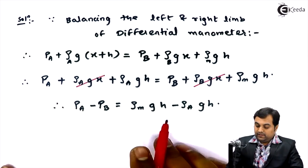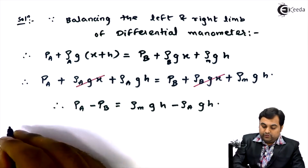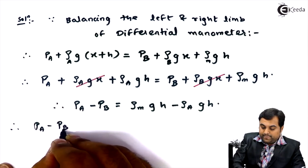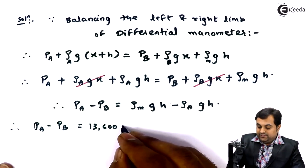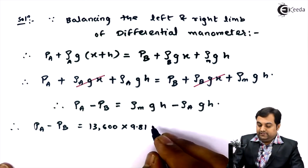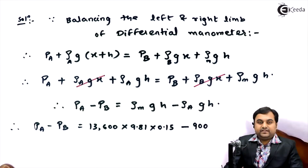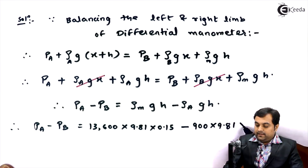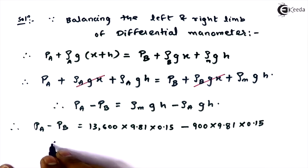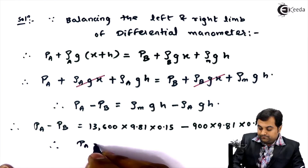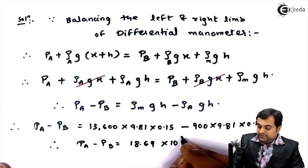Substituting all values: Pa minus Pb equals (13600 × 9.81 × 0.15) minus (900 × 9.81 × 0.15). Calculating throughout, the answer is Pa minus Pb equals 18.69 × 10³ N/m².